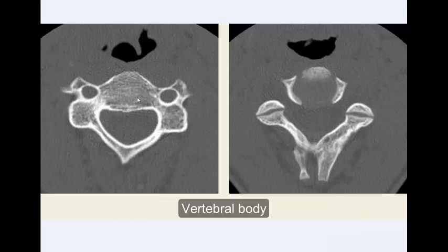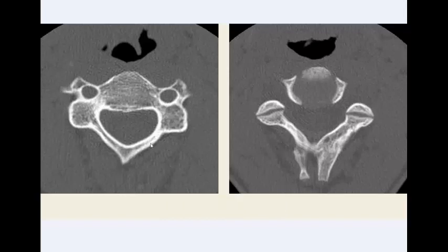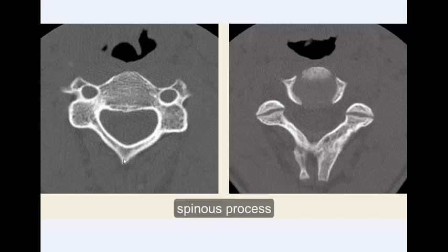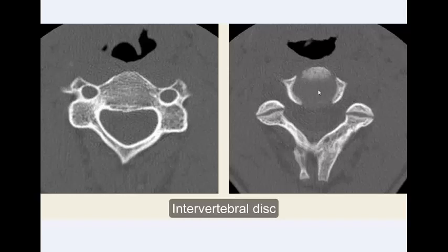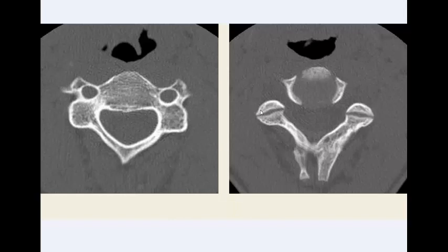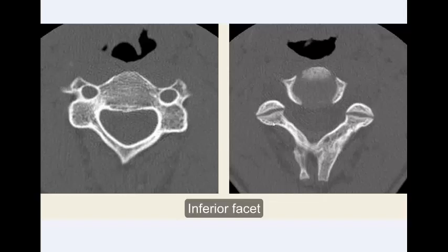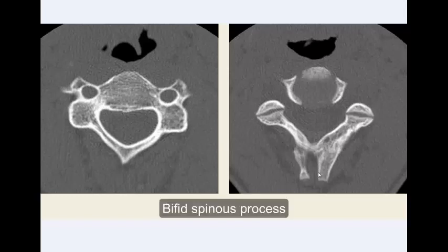Structures visible include: the vertebral body, transverse foramen, transverse process, lamina, spinous process, intervertebral discs, uncinate process, superior facet, inferior facet, facet joint, and spinous process.